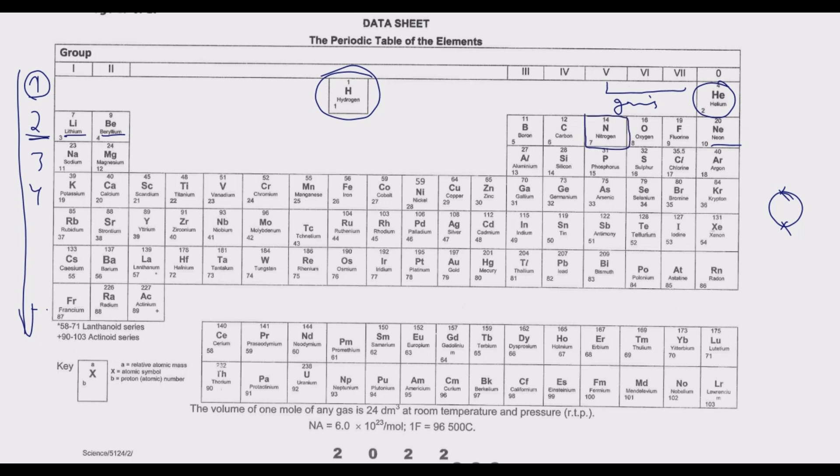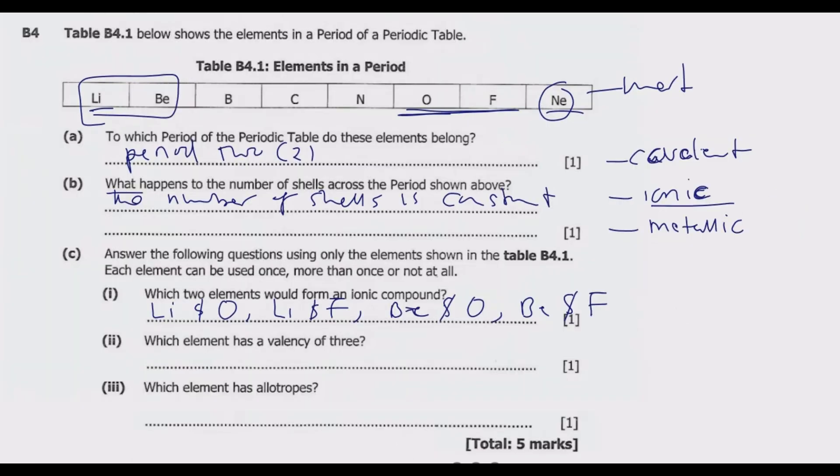So we have nitrogen. Then when you come here, we have boron. Boron is willing to donate three electrons in the outer shell to have a complete outer shell. So in this case, it's either boron or nitrogen. Any of those can be used.